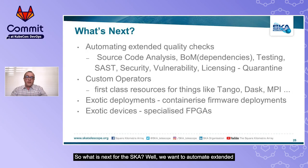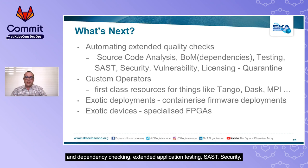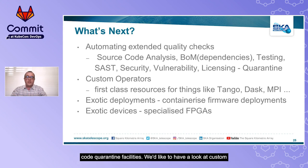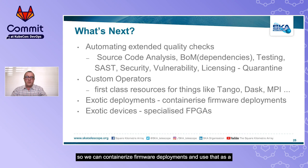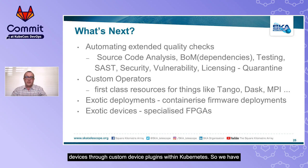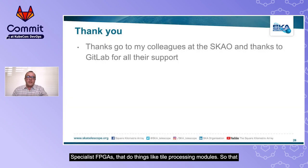So what is next for the SKA? We want to automate extended quality checks: source code analysis, bill of materials and dependency checking, extended application testing, SAST, security vulnerability and licensing checks, and code quarantine facilities. We would like to look at custom operators — potentially creating first-class resources for things like Tango devices themselves, DAS clusters, or MPI clustered applications. We also have exotic deployments where we can containerize firmware deployments and use that as a launching mechanism. There is also the possibility of managing exotic devices through custom device plugins within Kubernetes, such as specialist FPGAs that do tile processing modules.